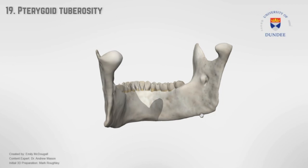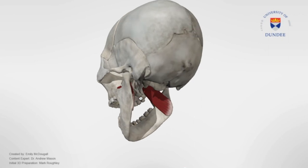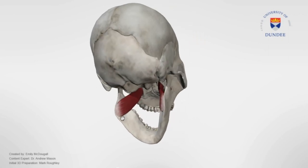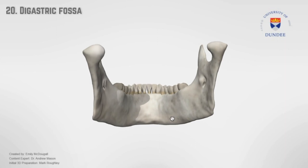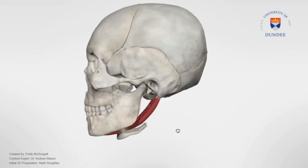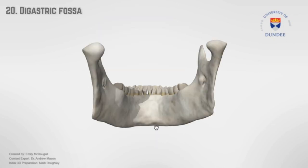Pterygoid tuberosity is a rough area for the attachment of the medial pterygoid muscle on the internal surface of the gonial angle. Digastric fossa — these are oval depressions for the attachment of the anterior belly of the digastric muscles, located below the mental spines on the internal surface of the mandible on either side of the midline.